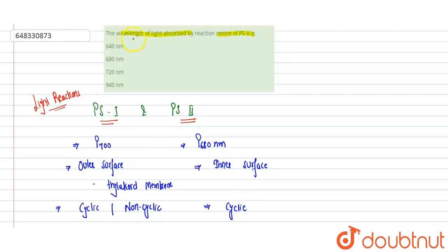The question asks for the wavelength of light absorbed by the reaction center of Photosystem 2. The reaction center of Photosystem 2 absorbs light at 680 nanometers. Looking at the options: 640 nanometers is incorrect, 680 nanometers is correct.